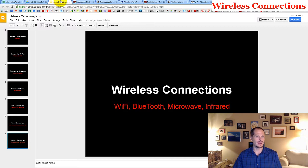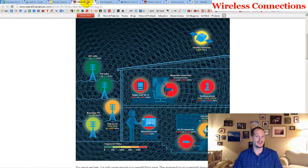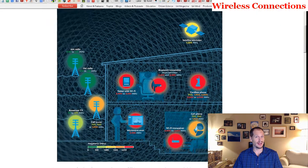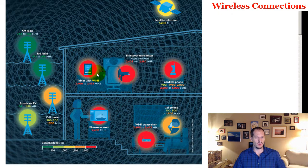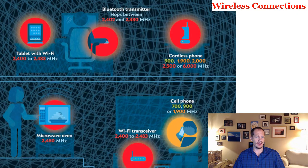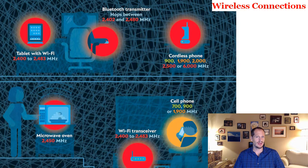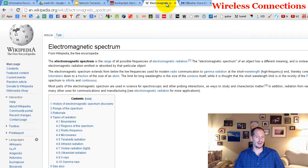Connecting things wirelessly really drags us into the electromagnetic spectrum. Here you can see different devices generating and sending off different wireless frequencies and waves. All these ripples in this diagram represent wireless waves being sent back and forth. You can also read about the electromagnetic spectrum on Wikipedia.